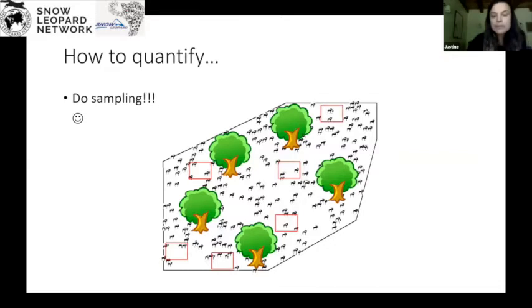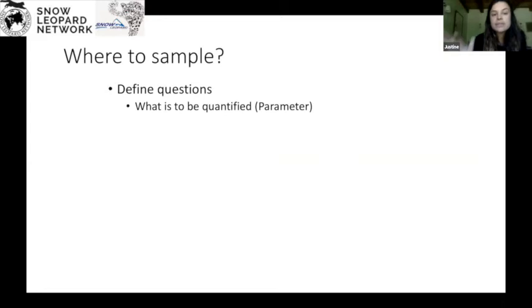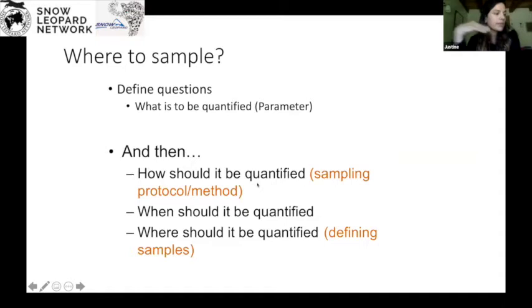But before we go more into this, we'll explain a little more about this. It's important to define your questions. So at the very beginning, even before you go ahead and sample, what are you trying to quantify? Is it abundance? Is it density? Or maybe it's something else like occupancy or habitat use of the species. So it's really important to define this and then to decide what method you plan to do. And the method is the how.